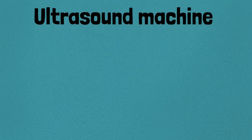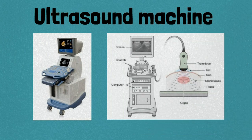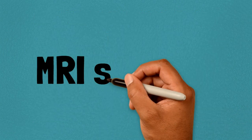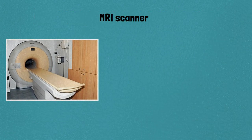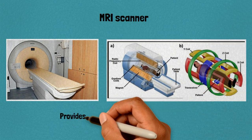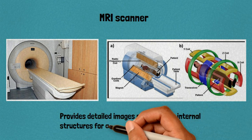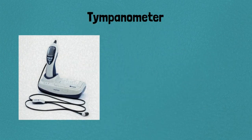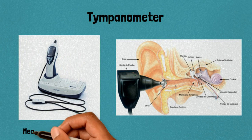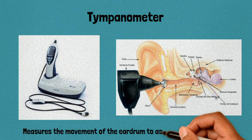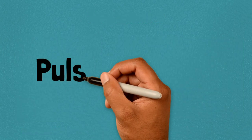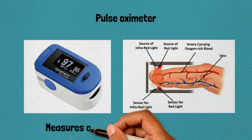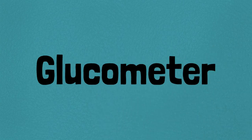7. Electrocardiograph: records electrical activity of the heart to diagnose heart conditions. 8. Ultrasound machine: uses sound waves to create images of internal organs, often used in prenatal care. 9. MRI scanner: provides detailed images of the body's internal structures for diagnosing various conditions. 10. Tympanometer: measures the movement of the eardrum to assess middle ear function.